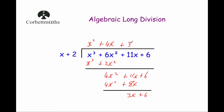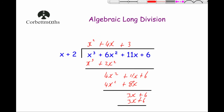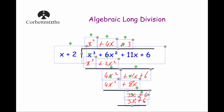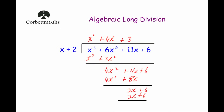Now we're going to multiply x plus 2 by the 3 we just wrote: 3 times x is 3x, and 3 times 2 is 6, so plus 6. Our last step is to subtract: 3x plus 6 take away 3x plus 6 is 0 — 3x take away 3x is 0 and 6 take away 6 is 0. That means we don't have a remainder and we're done.